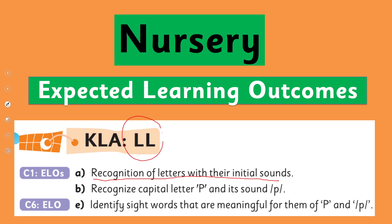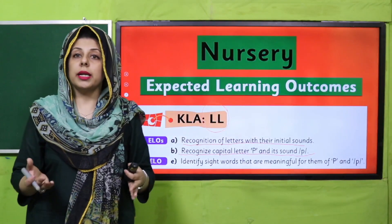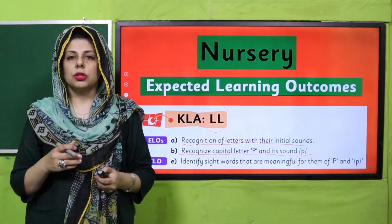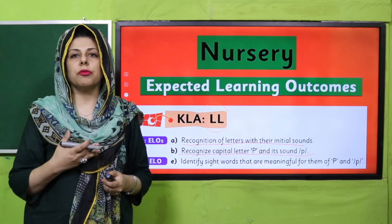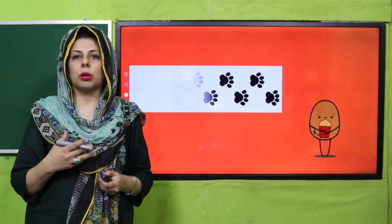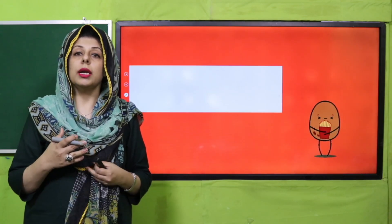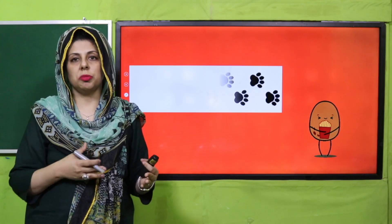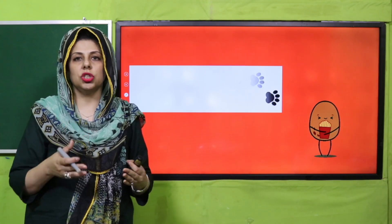Key learning area hai humara language and literacy. Isi liye hum sounds ki jo capital letter ki recognition usko bhi develop karna hai. In nursery class, they should also know some sight words related to the sound they are learning. Ager aap in ko isi tarah routinely practice kar rye hain, toa aap dekhenge ke bachon ki jo learning hai, or reading jo hai, uski speed behtar hoti chali jaegi.